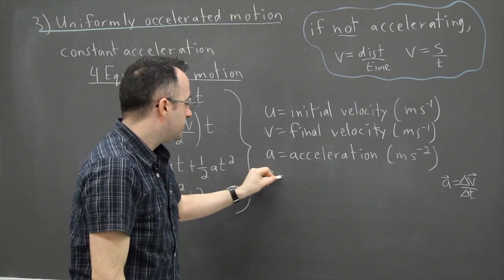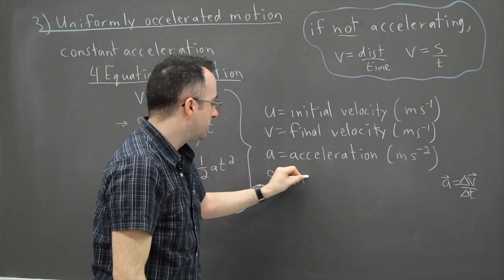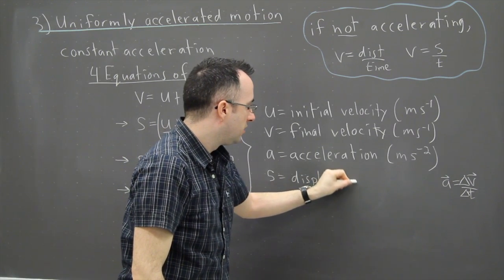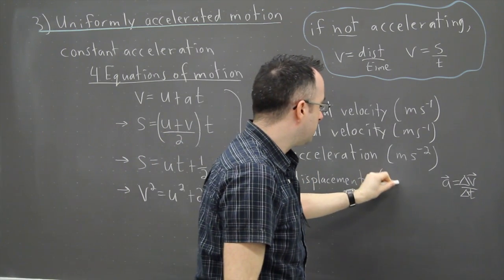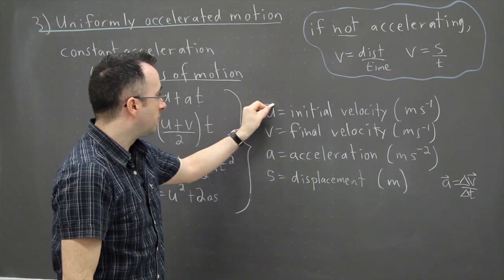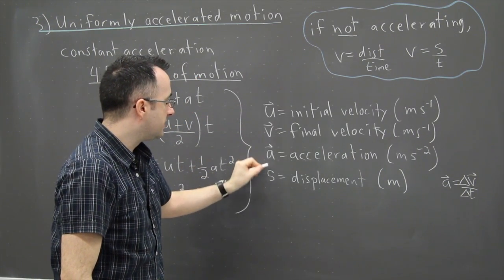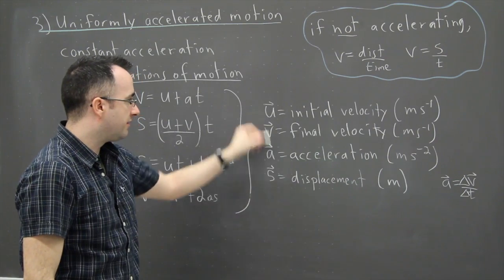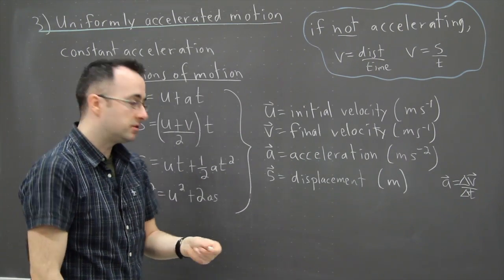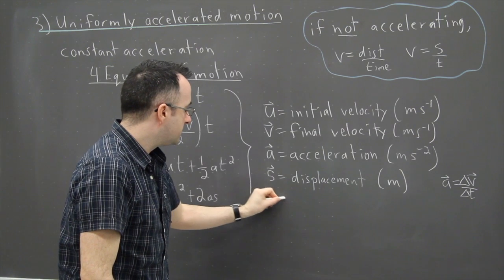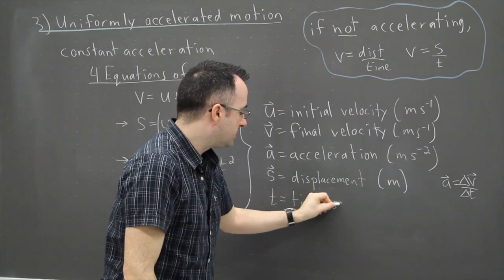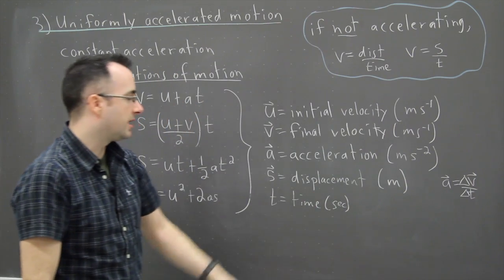We have S, which is the displacement. If we're keeping everything in vector form, we're going to say displacement, which is in meters. And if you really want to do everything correctly, we should actually probably put little vector signs everywhere here because these are all vectors. However, we could have them as not vectors if we wanted to. And the last thing is T, which is time. And that's normally measured in seconds.